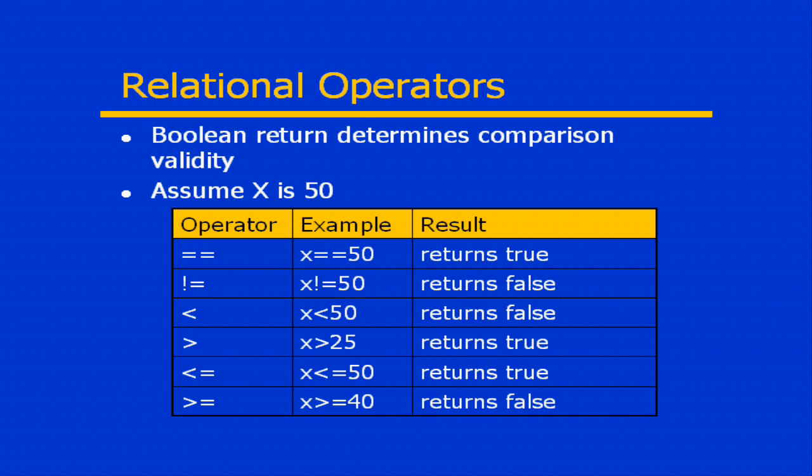We also have the standard less than and greater than signs. They behave as you would expect. The less than and equal to is the less than sign followed by the equal sign, and then we have the greater than and equal to as well. And those behave the way that you would probably expect.